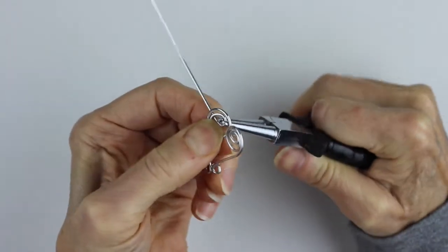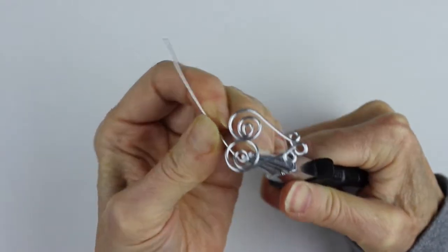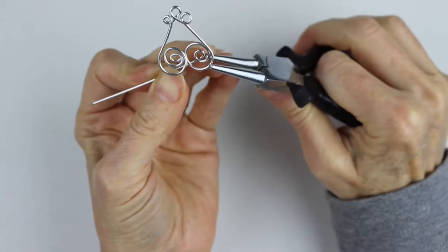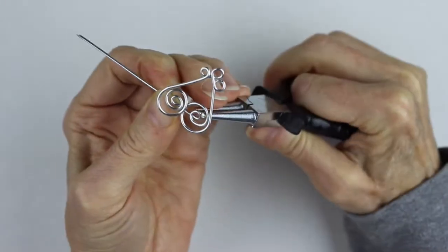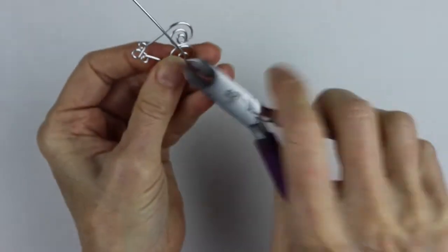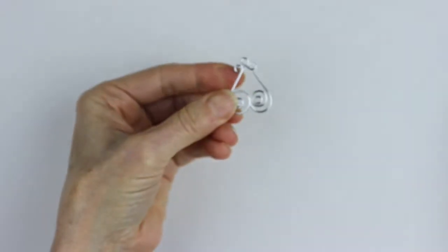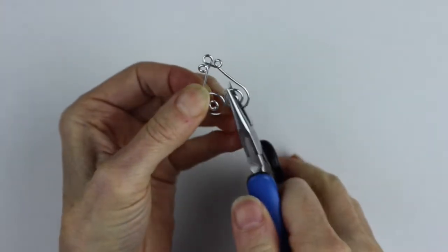Do your best to get it somewhat symmetrical. It doesn't have to be perfect, but you can just keep wiggling it around till it looks like it's more or less the same on both sides. Then we're going to clip that edge, and once you have the basic shape, you'll just pinch it in like that.